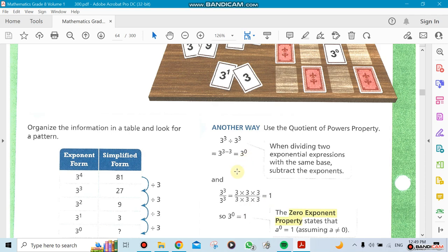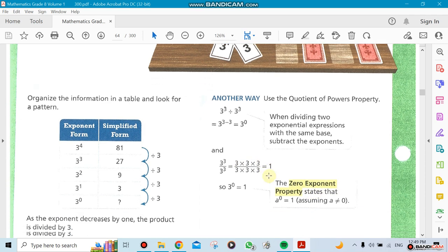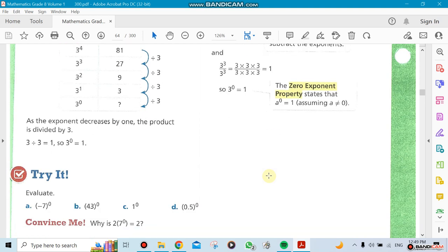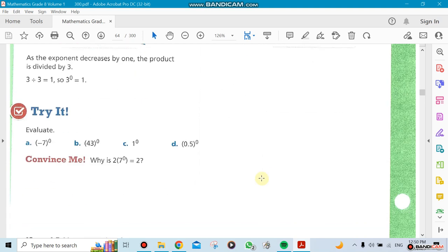So it's exactly matching with 3 to the power of 0. That's a proof that 3 to the power of 0 actually equals 1. So that's what we call the zero exponent property. Anything to the power of 0 is going to be 1.